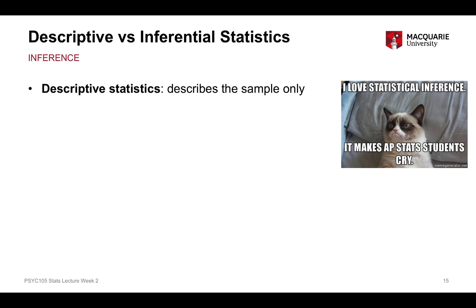Descriptive statistics are ways of describing, summarizing, or aggregating the sample that you've collected. When you collect data from a sample and you get information on a bunch of variables — variables being things that you've got information about — descriptive statistics allow you to summarize that data obtained from the sample. So descriptive stats apply to the sample only.